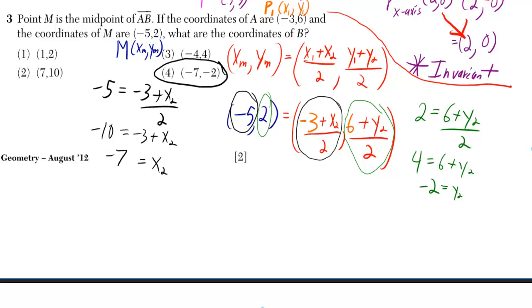Point M is the midpoint of AB. If the coordinates of A are negative 3, 6 and the coordinates of M are negative 5, 2, what are the coordinates of B?